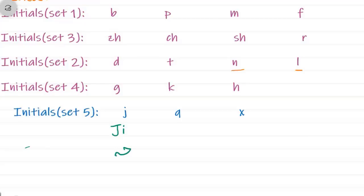The second initial from this set five is q, but it is going to pronounce as ch. Read after me: q, q.